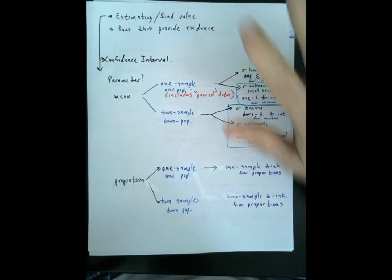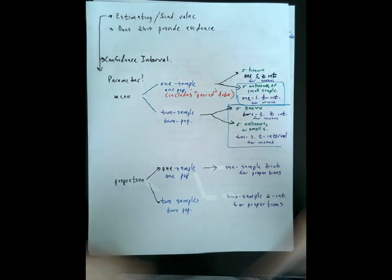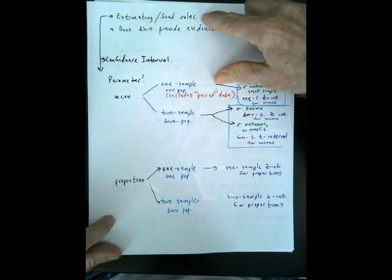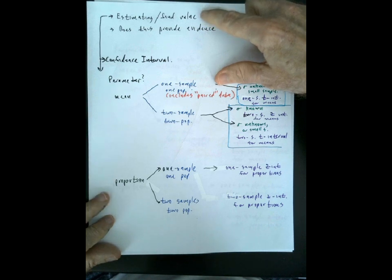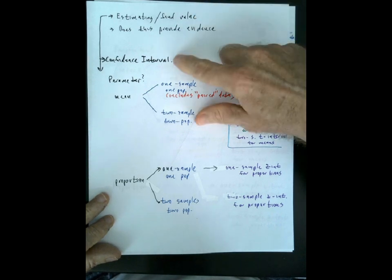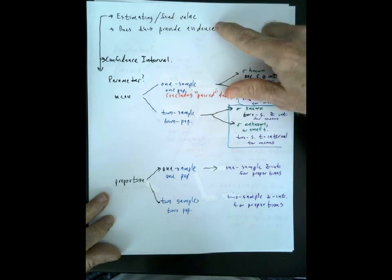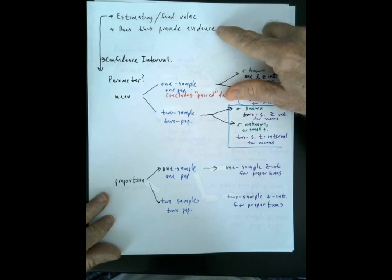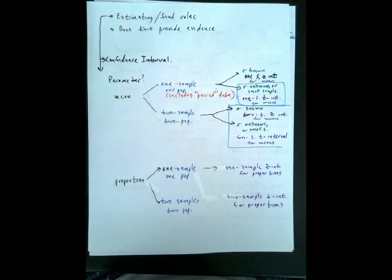The first kind — estimating — involves calculating a confidence interval. If it's clear the problem involves estimating, you calculate a confidence interval. If the problem involves providing evidence to make a decision or draw a conclusion, that's going to involve a significance test. So the first thing you think about is: confidence interval or significance test?